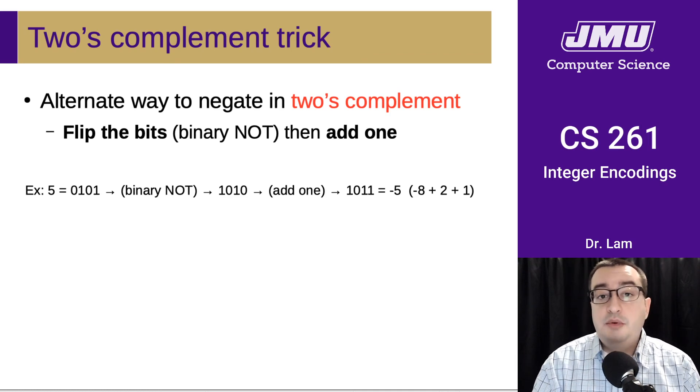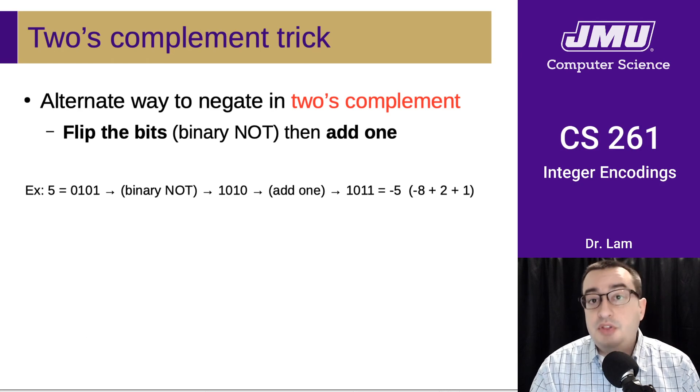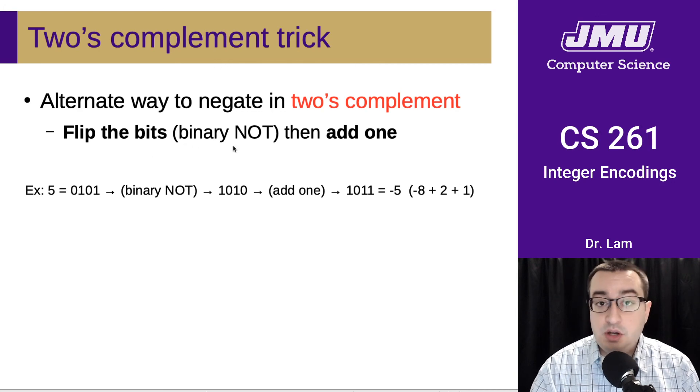And that's because there's actually a much quicker way of doing the negation in two's complement. And this relies on you being able to do the flip the bits operation, which was the negation in one's complement. So in order to negate in two's complement, you flip the bits, which we already know how to do, and then we add 1.